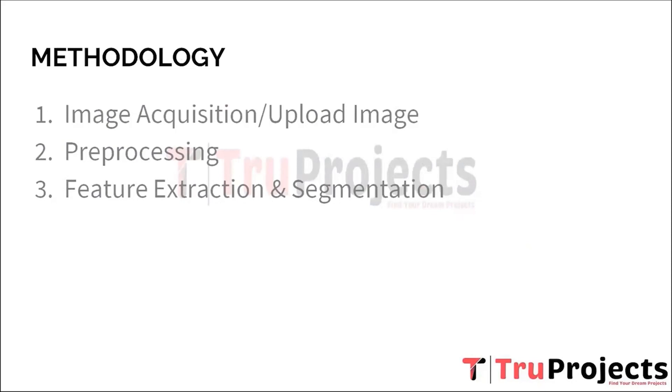Second, preprocessing. It is a critical step in OCR that involves the enhancement and cleaning of the acquired image to prepare it for further analysis. During preprocessing, various techniques are applied to improve the image quality, remove noise, correct distortions, and enhance contrast and brightness. The goal is to optimize the image for subsequent OCR steps, ensuring that the characters are well-defined and distinct, which ultimately improves the accuracy of character recognition during feature extraction.